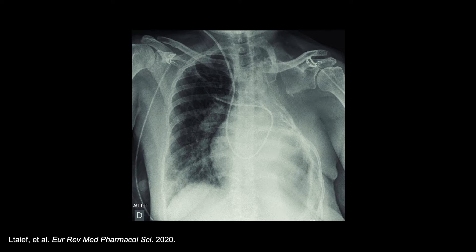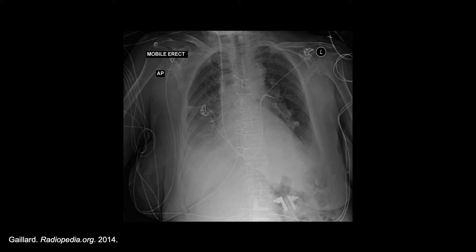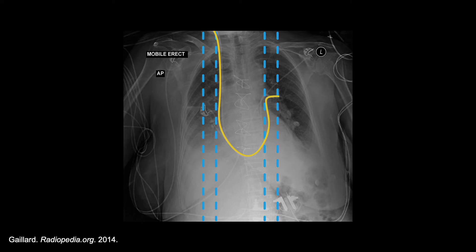Once in the main PA, the catheter should curve either to the right into the right branch of the PA or to the left into the left PA branch. The curve of the catheter is designed to direct it into the right main PA, so that will be the most likely location. The most critical thing to evaluate with this x-ray is the location of the tip itself. Ideally, the tip should be pointed horizontally while not curling downward and should be located no more than 4 to 5 centimeters from the midline. You can approximate this by dividing each lung field into three vertical slices, and the tip of the PA catheter should end at the outer edge of the medial slice.